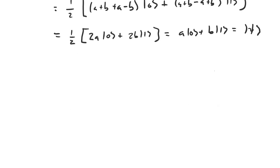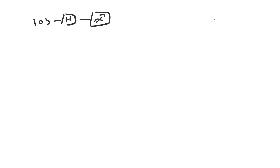Let's look at some simple quantum circuits involving the Hadamard gate. If we apply just one Hadamard gate, we have our qubit initially in the state |0⟩, pass it through a Hadamard gate, and then make a measurement. This will create the uniform superposition, so we'll have an equal probability of finding the qubit to be in the state |0⟩ and the state |1⟩ — both probabilities will be 0.5.